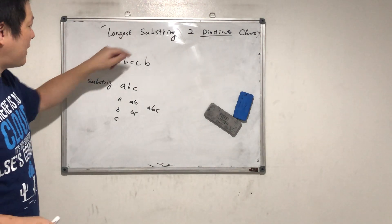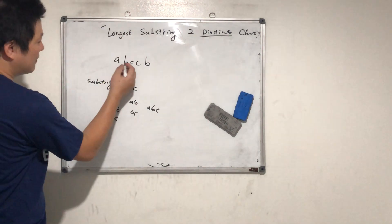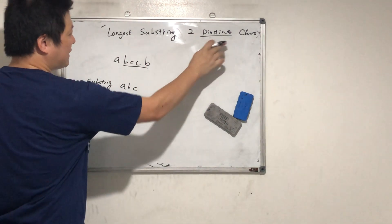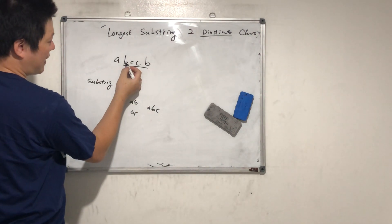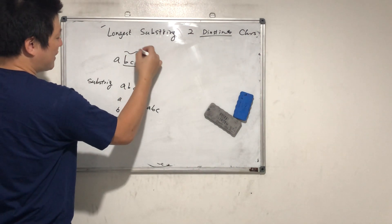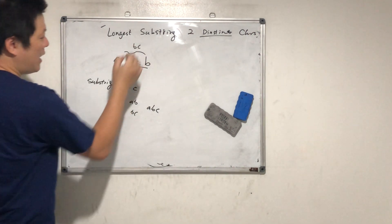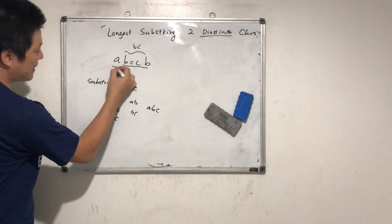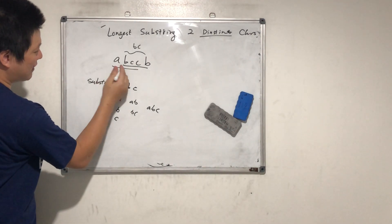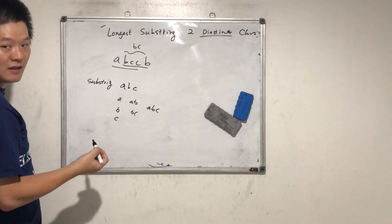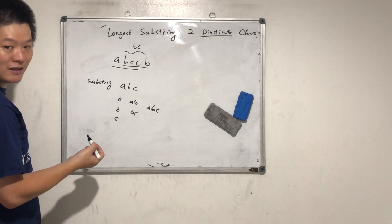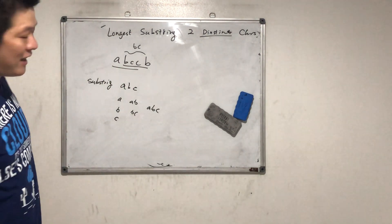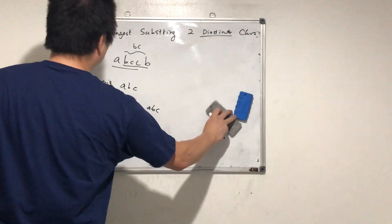So the longest substring — we can find this is the longest substring with two distinct characters because it has B and C. Only two. In this here, it will be only B and C. We can't choose this one because look — A, B, C, C — how many? Three: A, B, and C. Got it? So that's the question. Any idea how we're doing this?